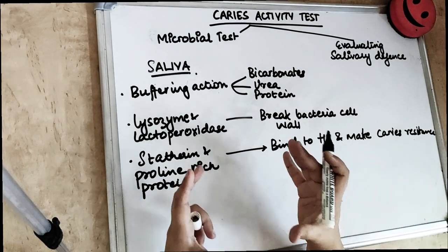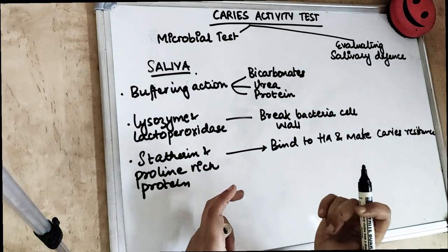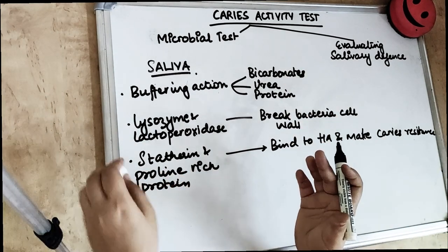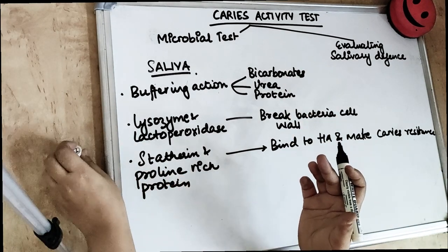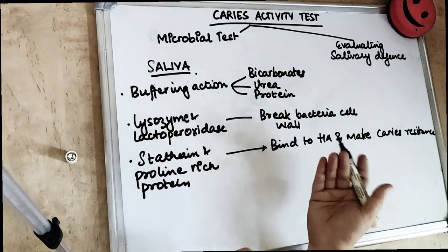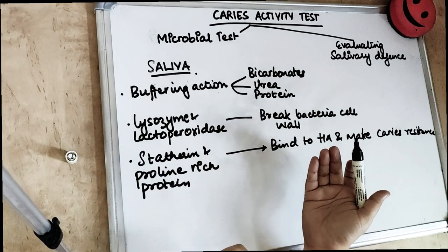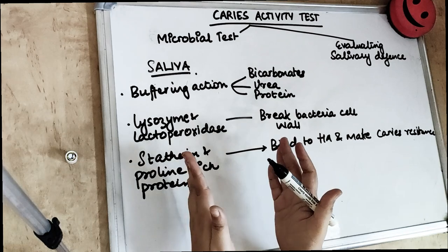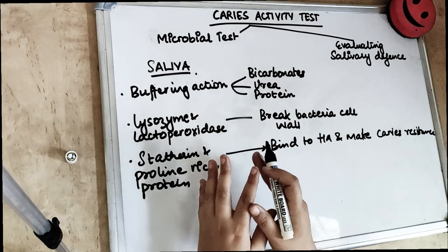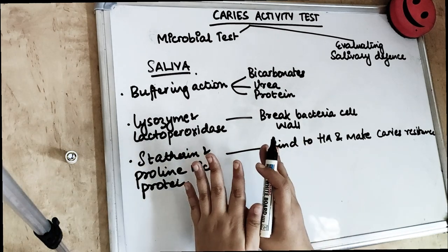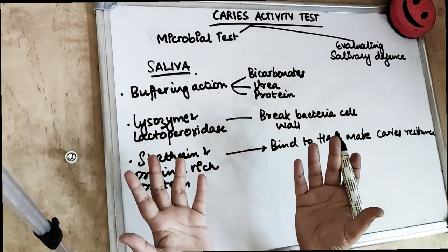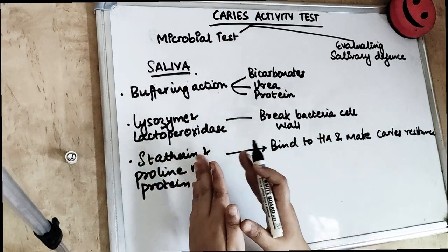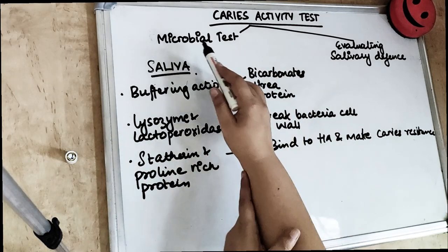The other thing we are going to talk about in today's video is evaluating the salivary defense mechanism — how saliva is protecting against caries. If the role of saliva is good, then the test will tell us that caries activity is going to be low, because saliva is performing well and the caries rate is reduced.